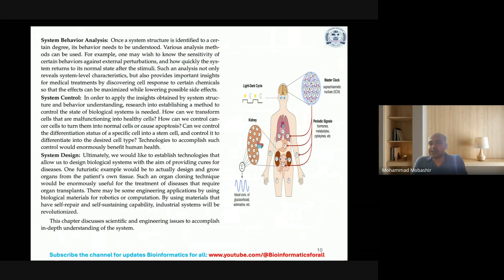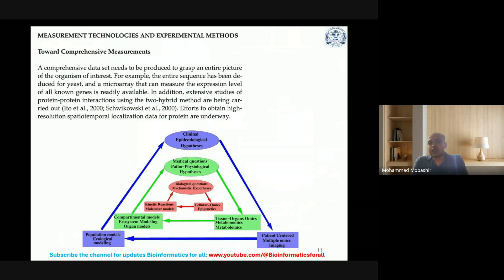For measurement technologies and experimental methods toward comprehensive measurements, comprehensive data sets need to be produced to grasp the entire picture of the organism of interest. For example, the entire sequence has been deduced for yeast, and a microarray that can measure the expression of all genes, as well as NGS, is readily available. Extensive studies of protein-protein interactions using the two-hybrid method are being carried out.